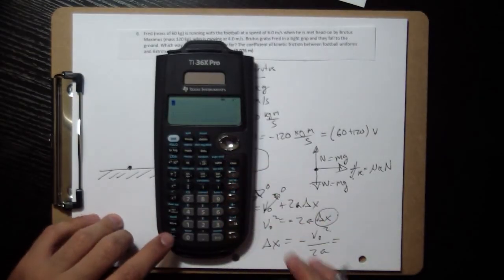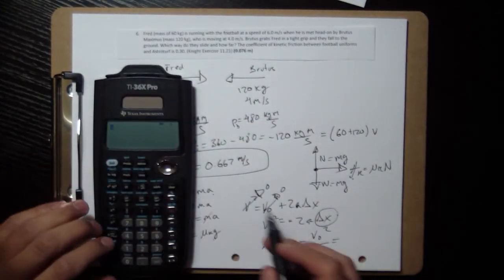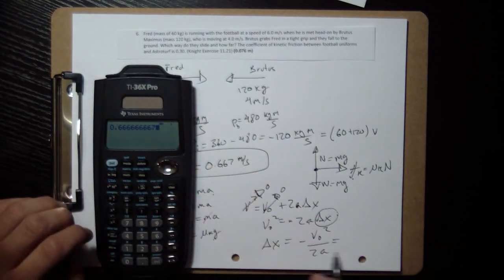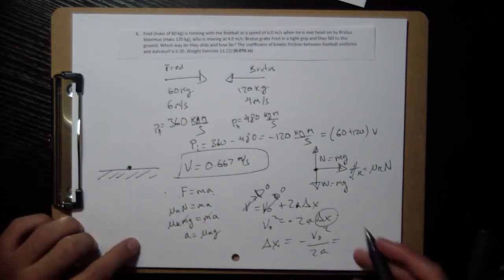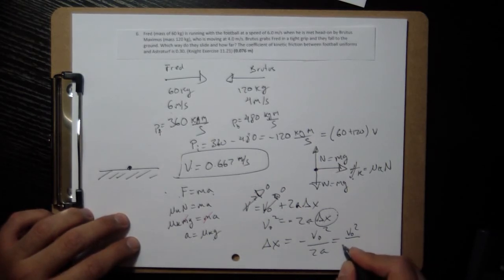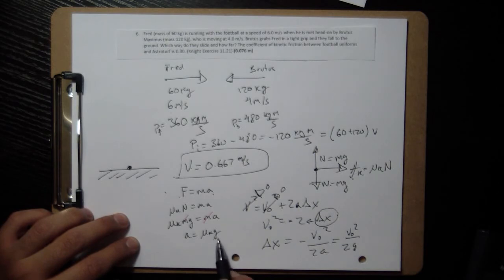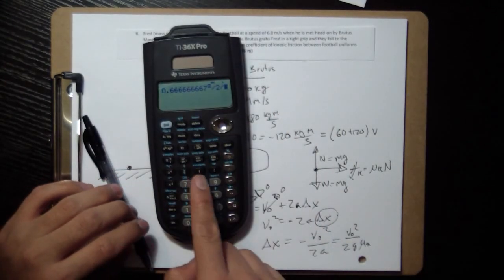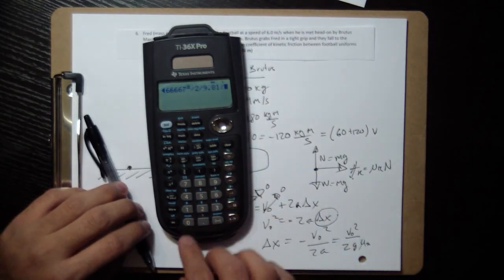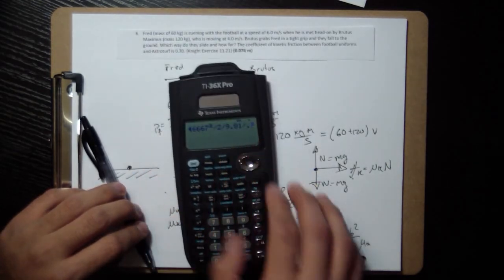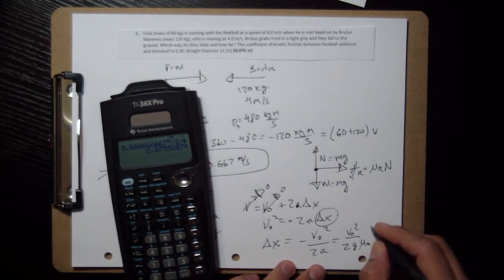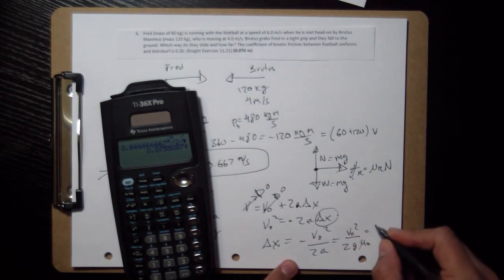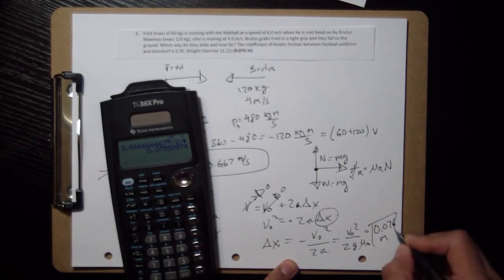Let me plug in some numbers. v_naught is 0.667. So we had that on here. Square that, divide by 2, divide by the acceleration. What is mu_k? Mu_k we know is 0.3. So that, divide by 2, divide by 9.81, divide by 0.3. We get 0.076. 0.076 meters. And we're done.